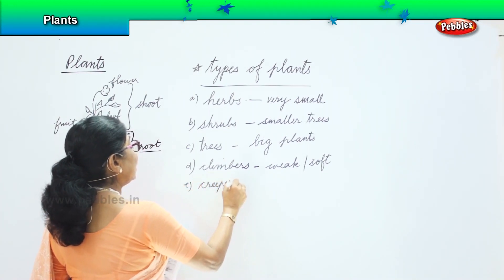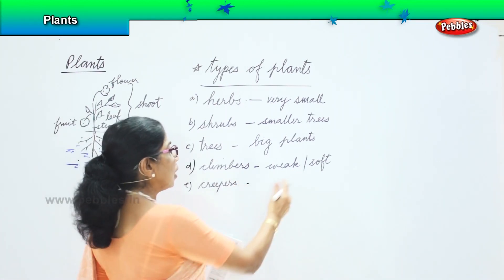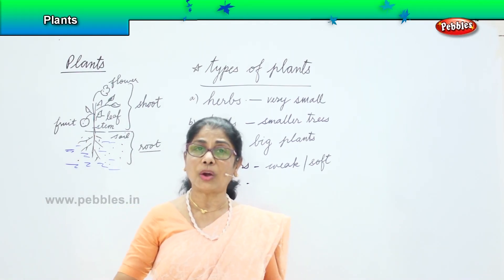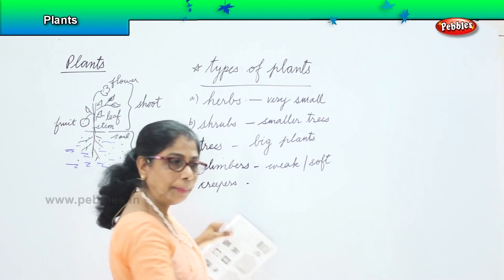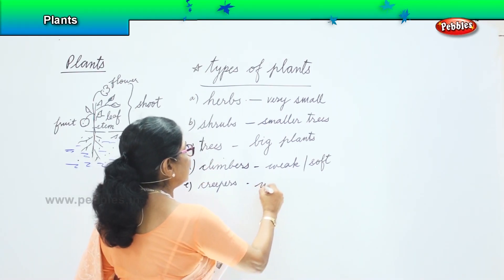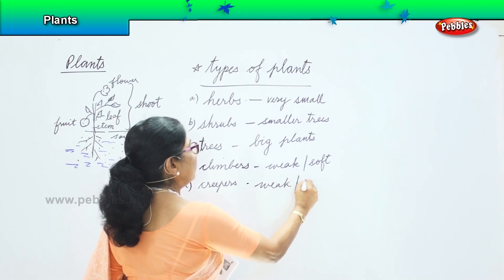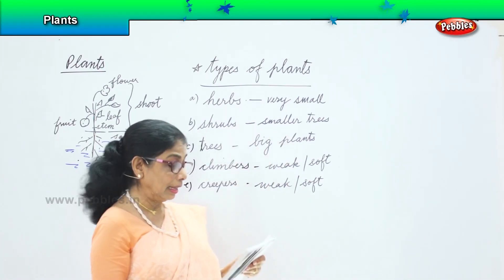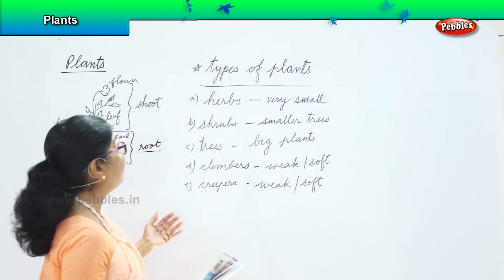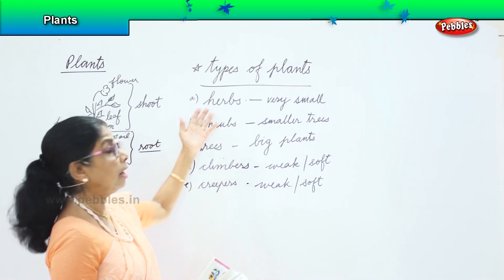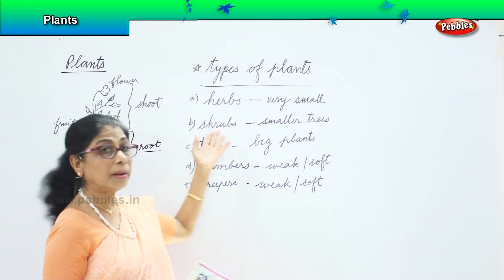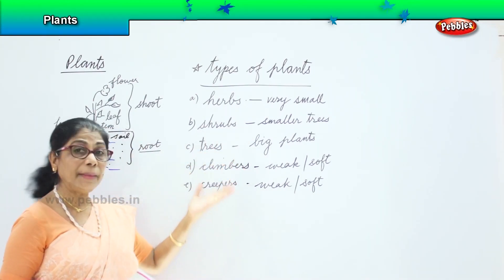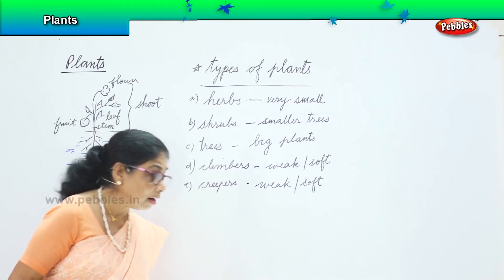Another type is creepers. Creepers also have weak, soft stems, but instead of climbing they run along the ground — they creep on the ground. So altogether we have five types of plants: herbs (very tiny), shrubs (little bushes), trees (huge), climbers (climb with support), and creepers (run on the ground).